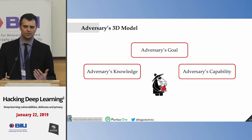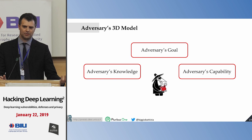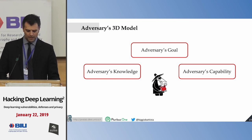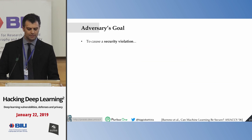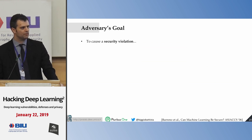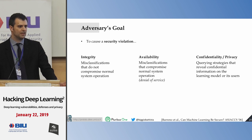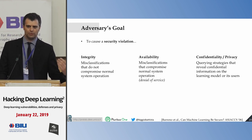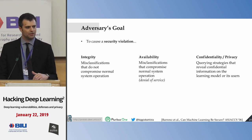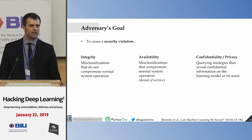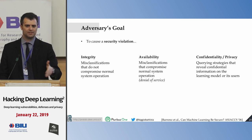Regarding the attacker's goal, the domain objective can be different security violations. From the security literature, these are classified as integrity violations, availability violations, and privacy violations — the CIA triad in security. In machine learning, integrity means enforcing the classifier to make errors without compromising normal operation, for example having a malware sample misclassified as legitimate without affecting the system for legitimate users.